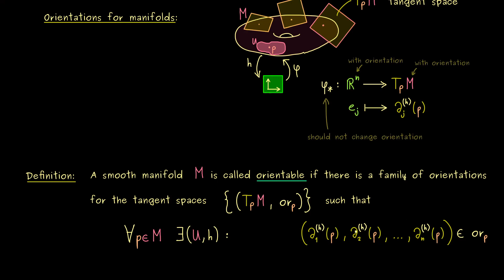However, now comes the thing we actually want for a manifold. Namely, the whole orientation should be continuous in some way. Which means, if we wobble around the point P inside U a little bit, then we can still use the same map H and we want to have a positively orientated basis as well.